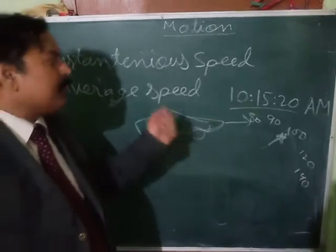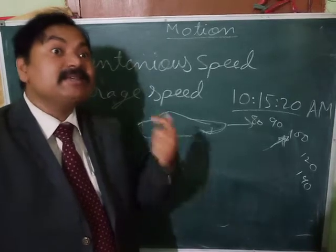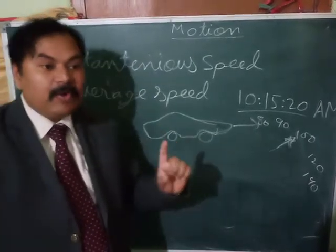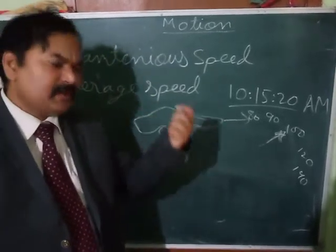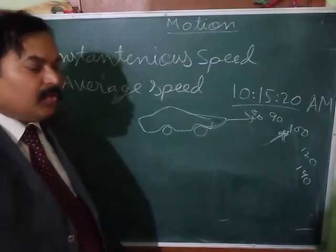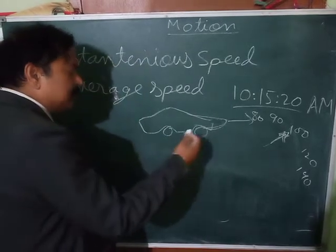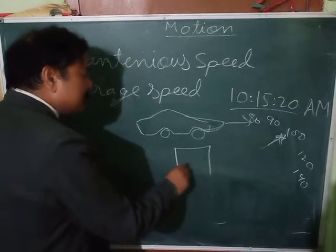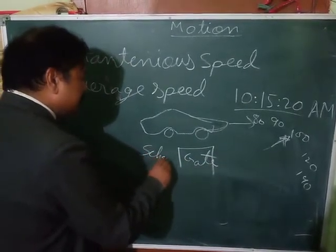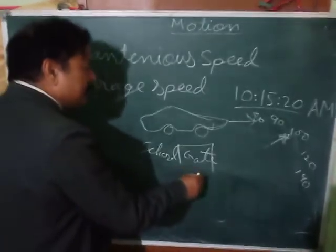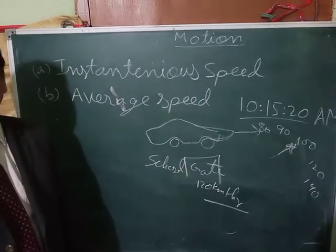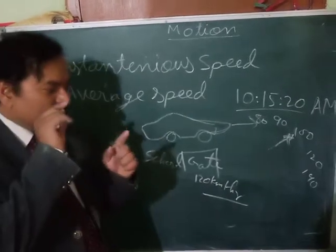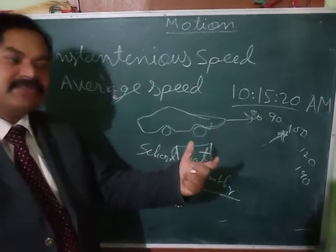Speed of a body at a particular time or at a particular place is called its instantaneous speed. For example, if your car was passing through the gate of your school at 120 km/h, that is the instantaneous speed near the school gate. Your speedometer gives the instantaneous speed.